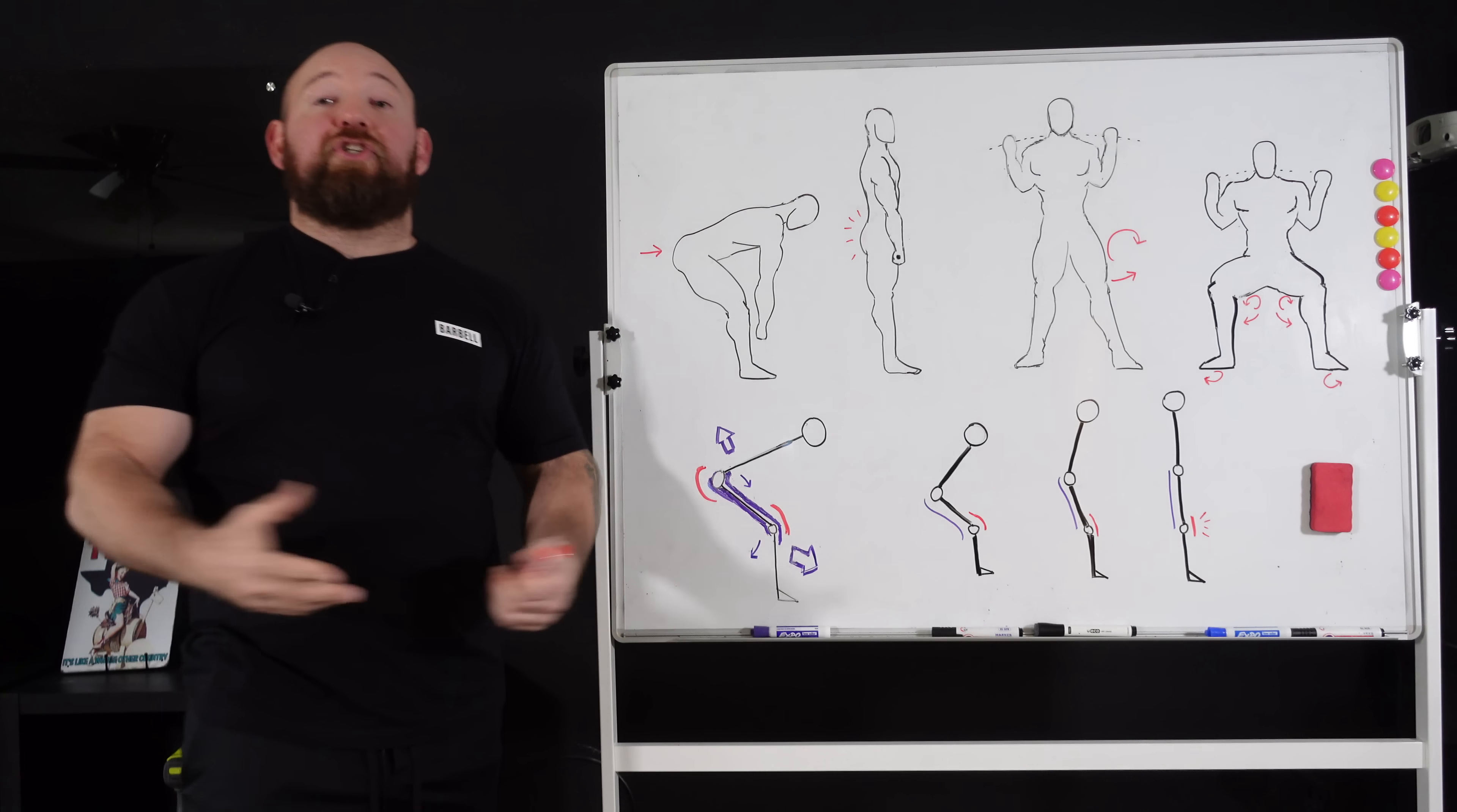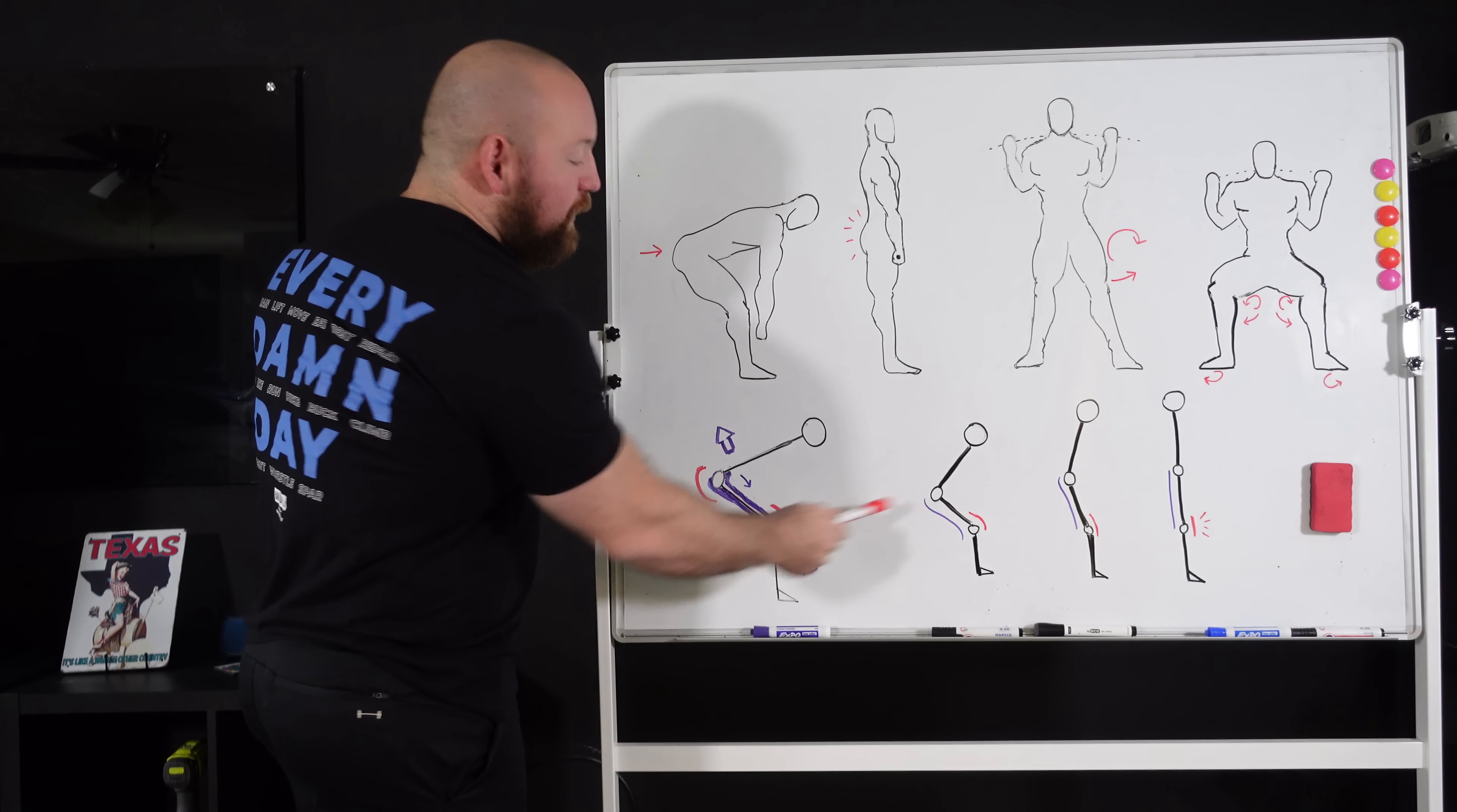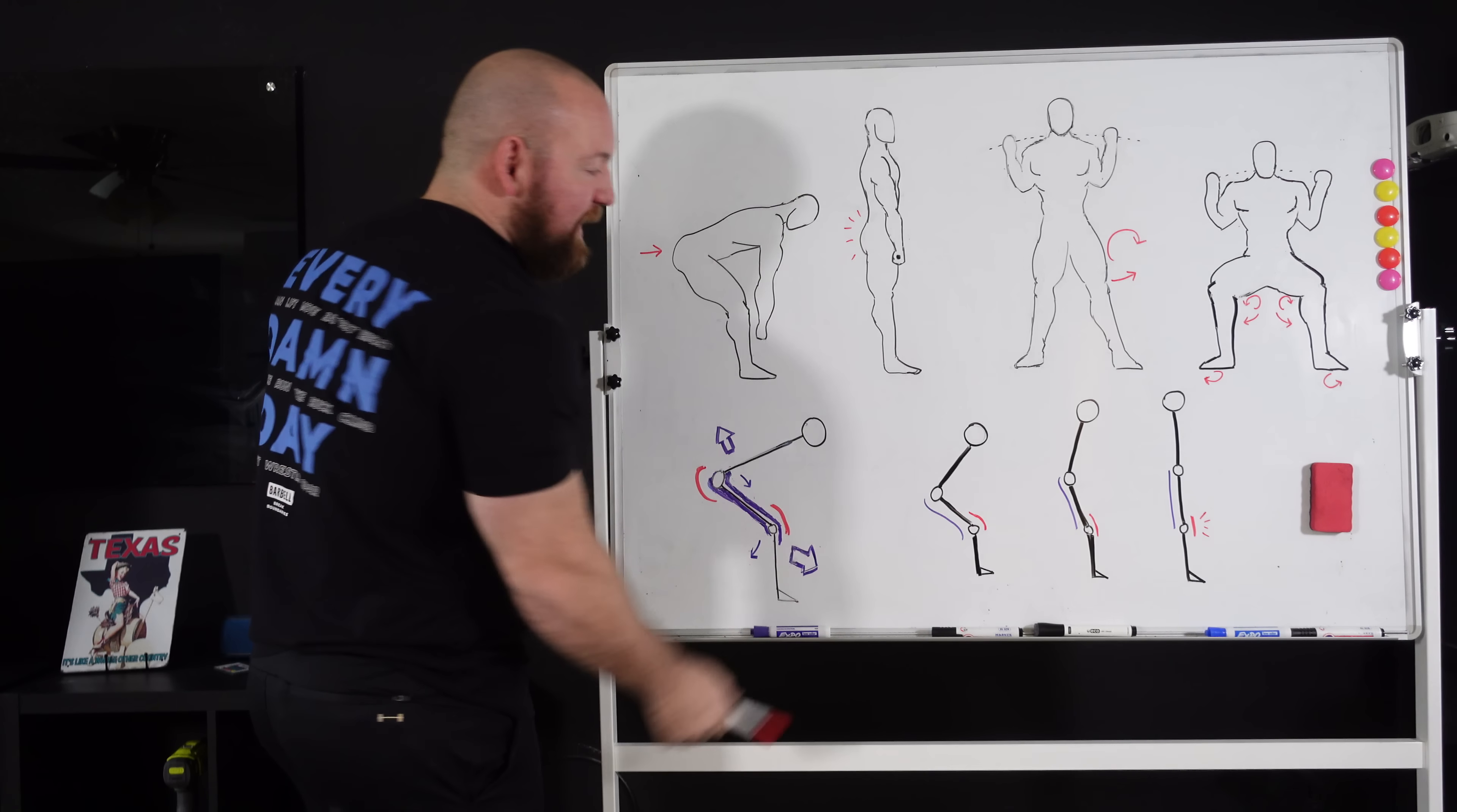I want you to imagine that your hamstring is just a string. Imagine that there's no force being produced. It's just a loose string. That's all it is. We've already established that as you squat down, the hamstring goes a little slack and the quadriceps get stretched. You know, you get that tension in the quads. Now, as the quads start to contract, you're getting knee extension. And as that knee extends,